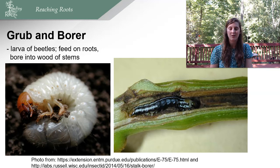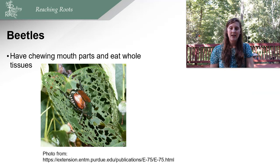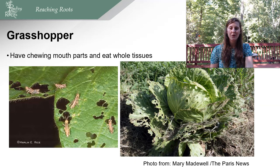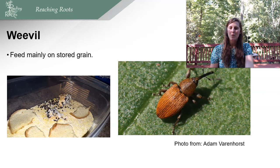Beetles have chewing mouth parts and eat whole tissue, causing distinctive damage patterns in leaves. Grasshoppers also have chewing mouth parts, eat whole tissue, and can cause huge damage. Weevils are interesting organisms that mostly feed on stored grain — this can be a huge issue if you've just harvested your grain, as they can cause extensive damage by eating it.